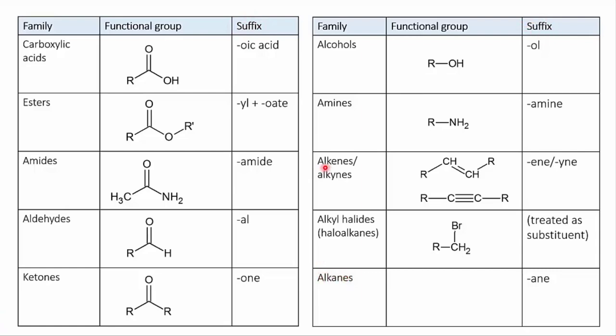Alkanes, alkenes, and alkynes you already know. For instance, you use the "-ene" suffix to indicate that there is a double bond in the molecule, and you use the "-yne" suffix to indicate that there's a triple bond.